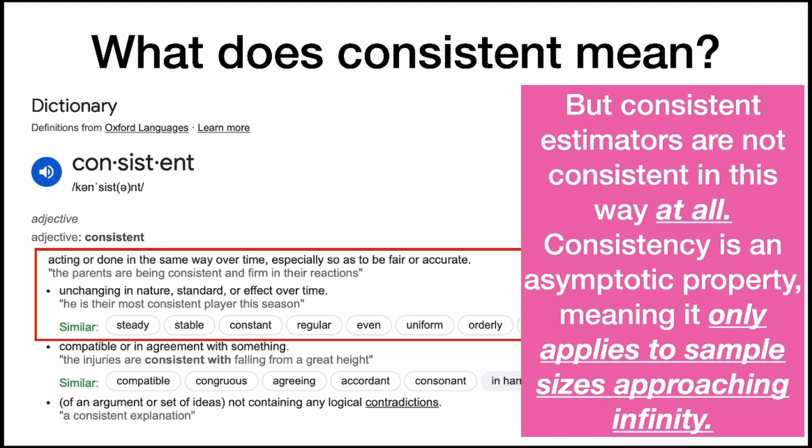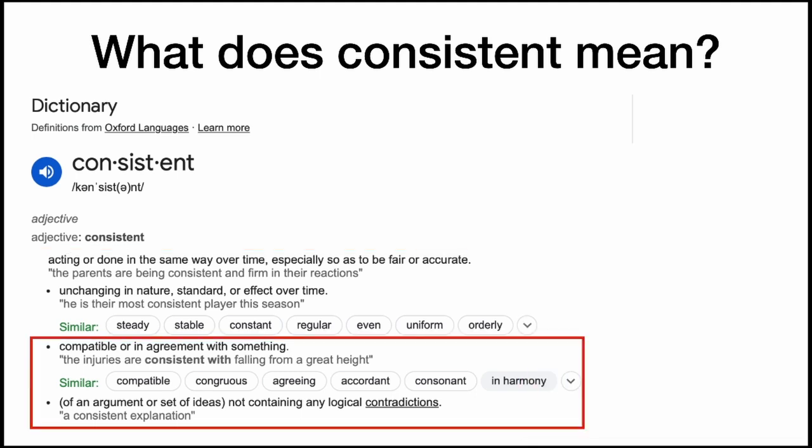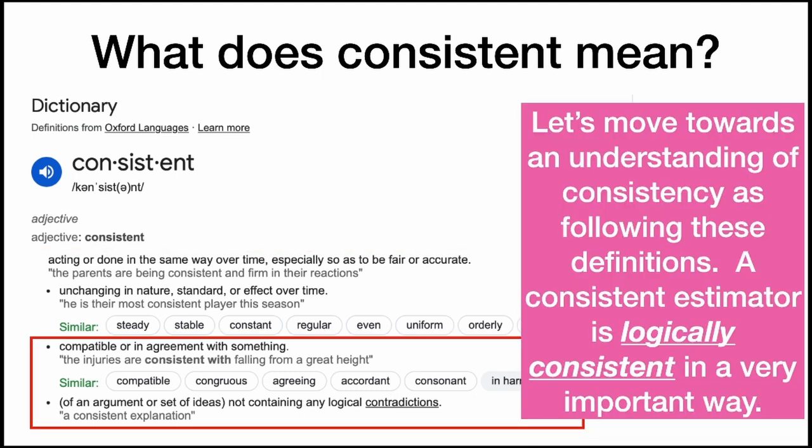Consistency is an asymptotic property, meaning it only applies to sample sizes approaching infinity. So instead, let's move towards an understanding of consistency as: compatible or in agreement with something, or not containing any logical contradictions. A consistent estimator is logically consistent in a very important way.